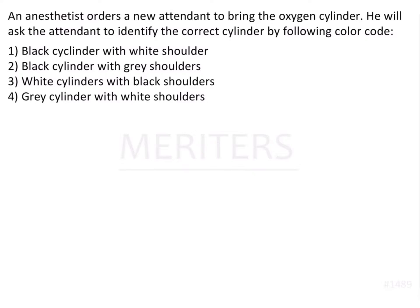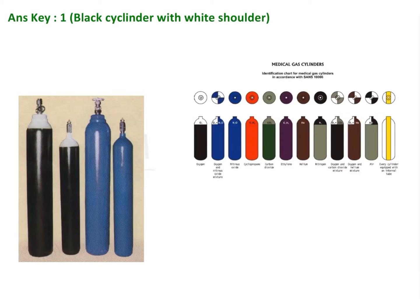The question is: an anesthetist orders a new attendant to bring the oxygen cylinder. He will ask the attendant to identify the correct cylinder by the following color code: black cylinder with white shoulder, black cylinder with gray shoulder, white cylinder with black shoulders, or gray cylinder with white shoulder. The answer is black cylinder with white shoulders.